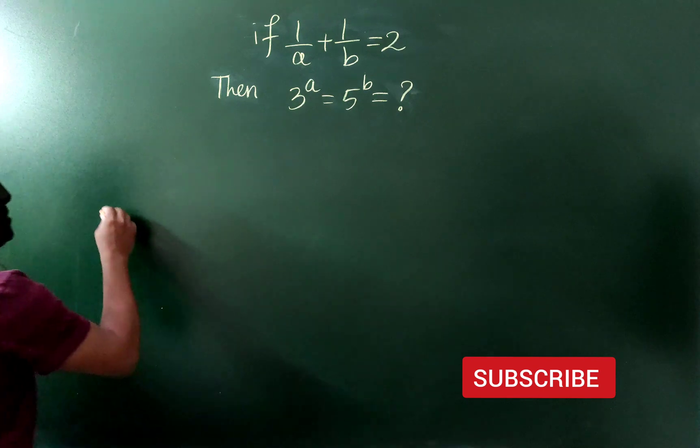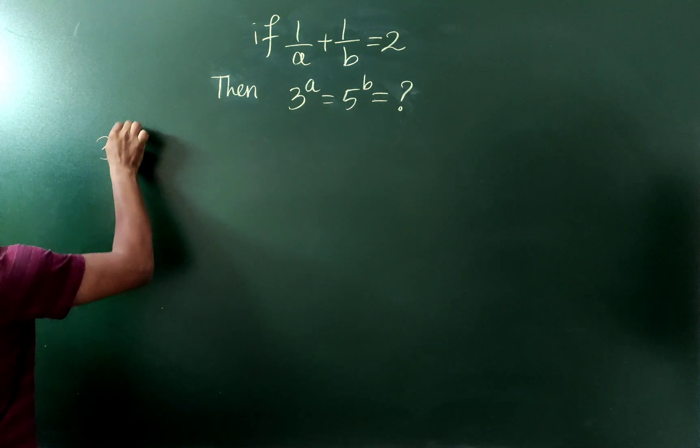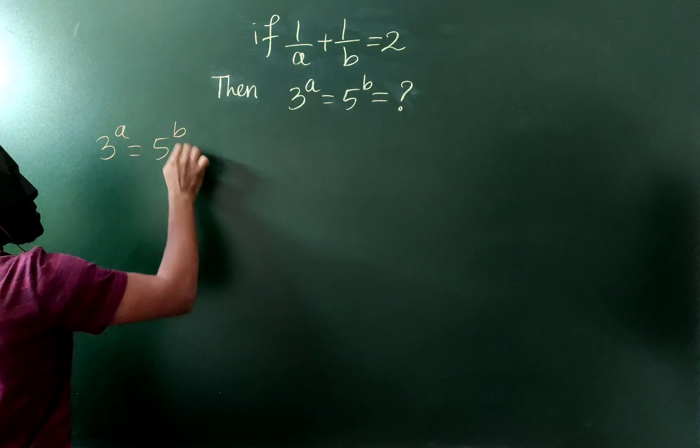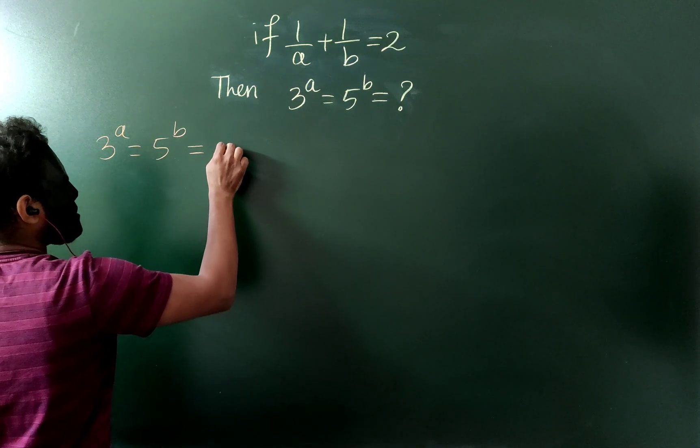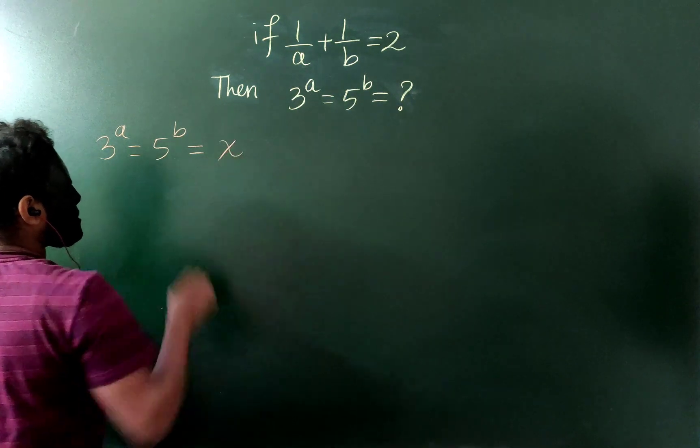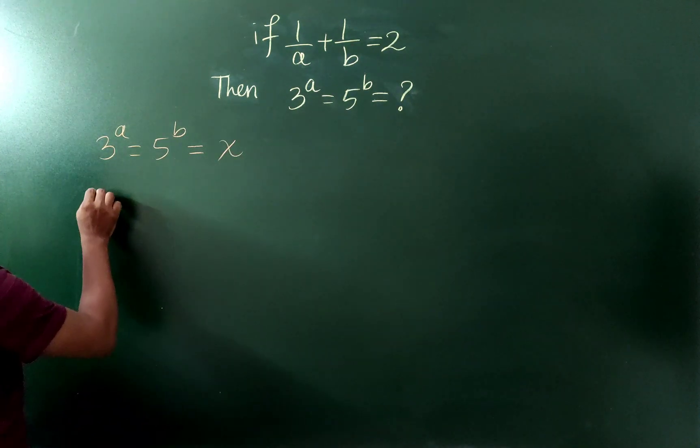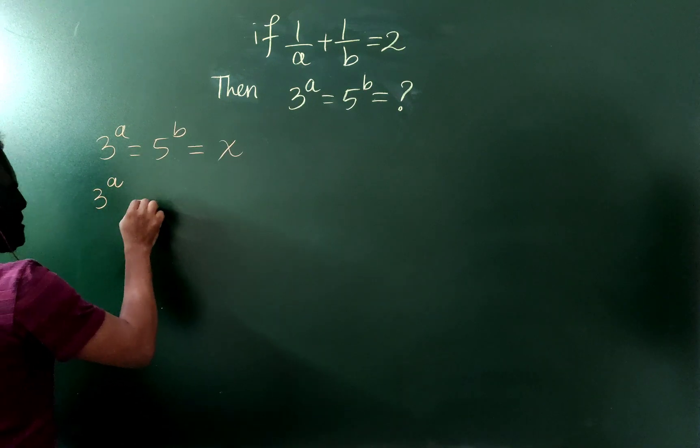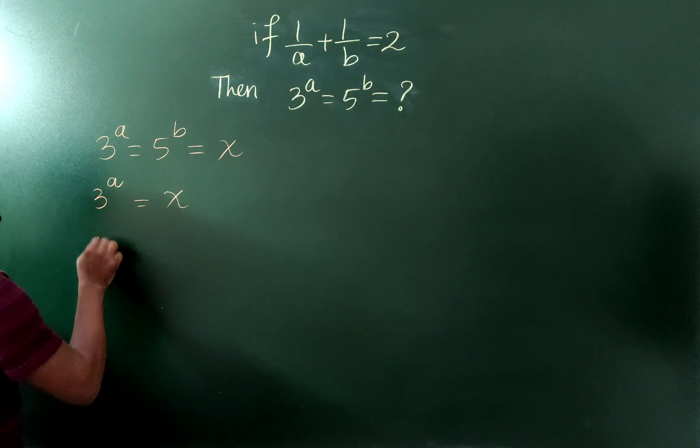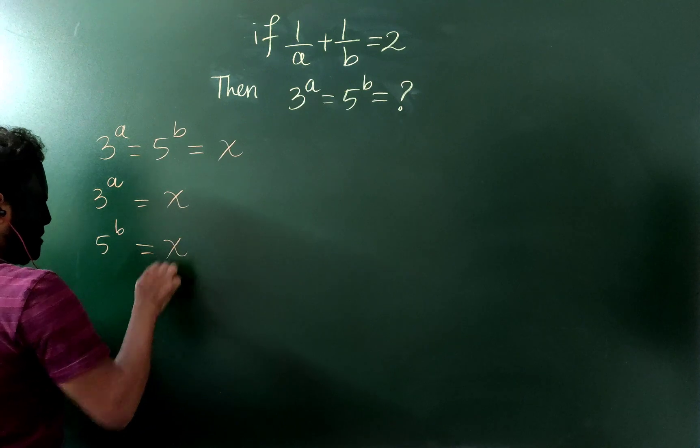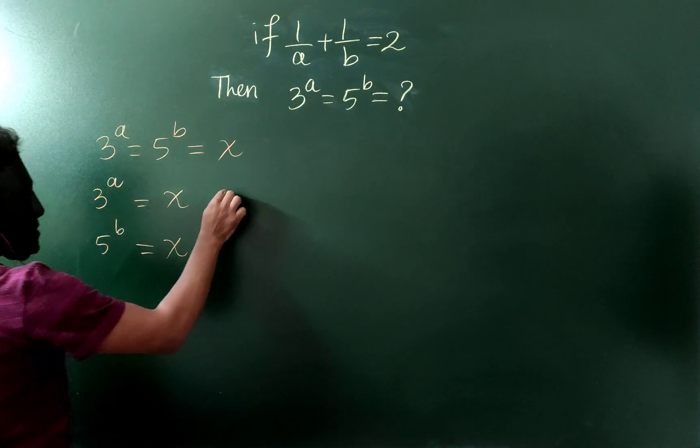So first, let's assume that 3^a equals to 5^b, both are equal, so say they are equal to x. It means 3 to the power a is also x, and 5 to the power b also x. Now let's take log both sides,